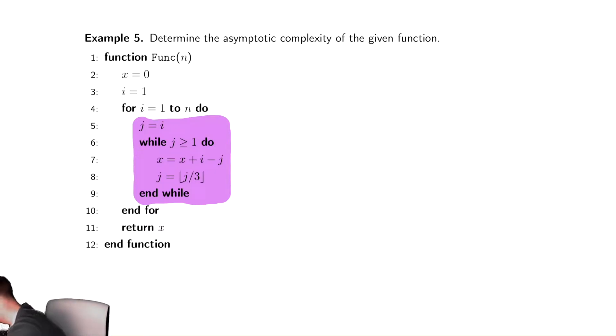We know from our previous couple of videos that we analyzed while loops by creating this iteration table. My variable for my while loop here, I need to be careful, is j. So the variable that I write in that column is j. j is initialized to be i, and then we update j by dividing by 3.